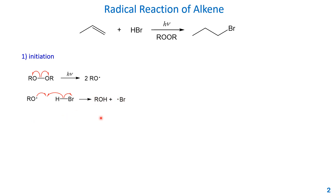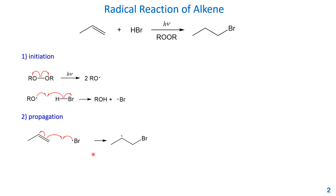Now we go to the propagation step. We need the bromine radical generated in initiation. The bromine radical reacts with the alkene — the pi bond undergoes homolytic cleavage to form two radicals, one on each carbon. One carbon combines with the bromine radical to form a new carbon–bromine bond, and the other carbon keeps the radical.